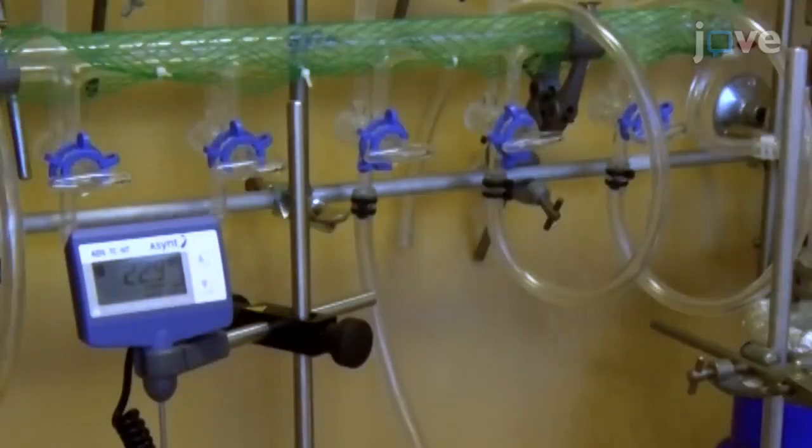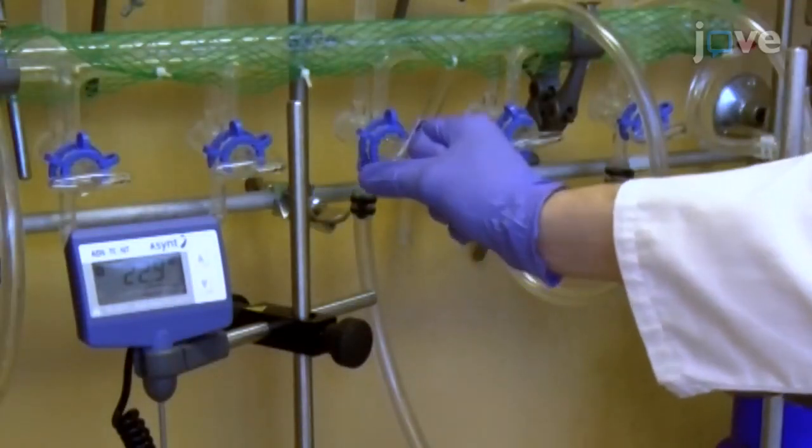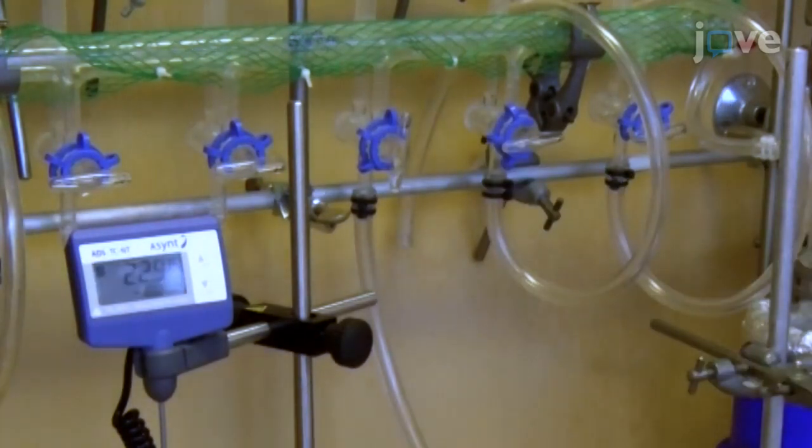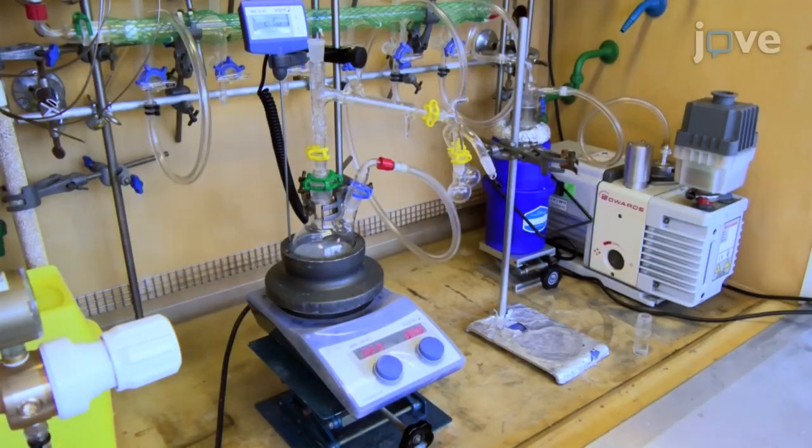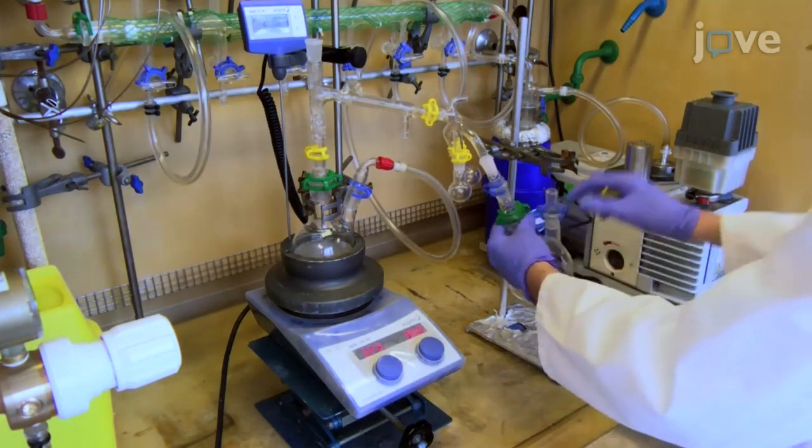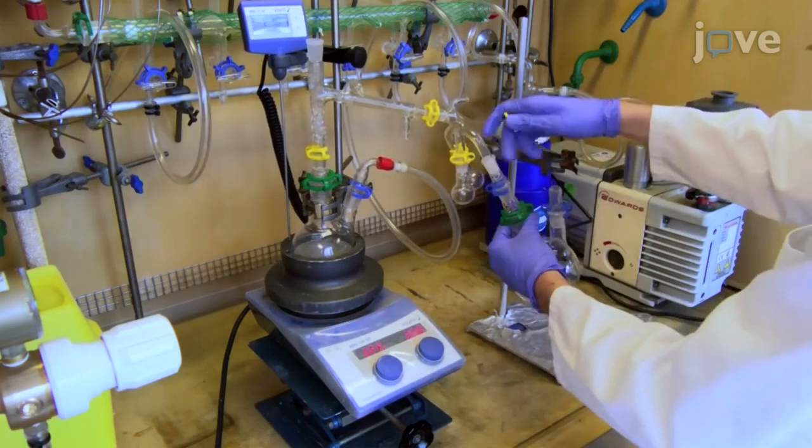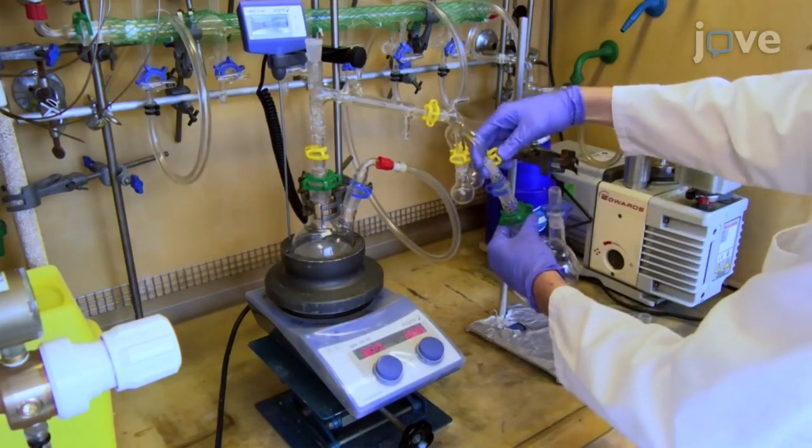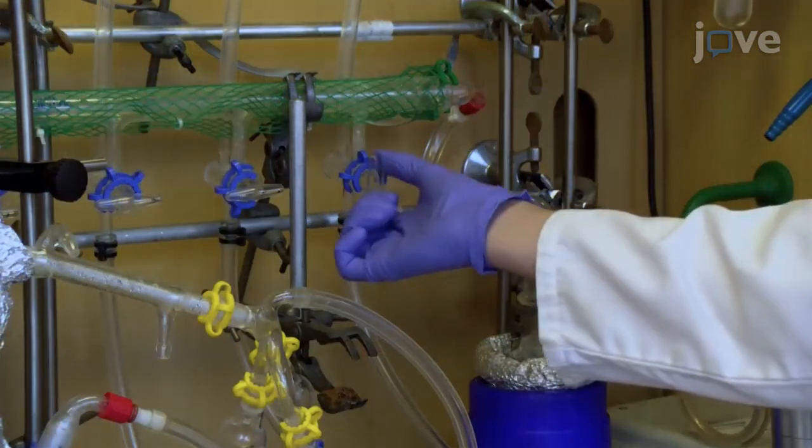Attach the flask to the Schlenk line and open to a steady flow of nitrogen. Assemble the vacuum distillation equipment on two stands by clamping the epsilon-caprolactone round bottom flask to one stand and another round bottom flask to the other stand. Maintain a steady flow of nitrogen through the system to prevent contamination.